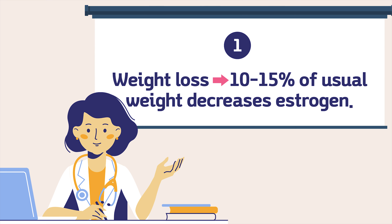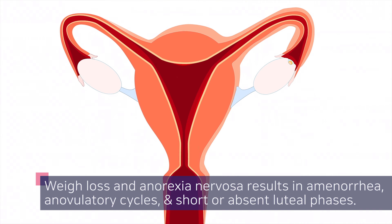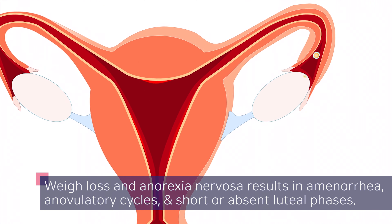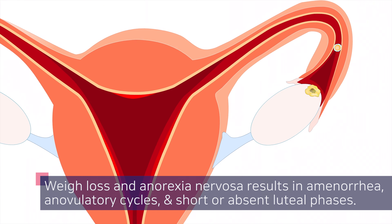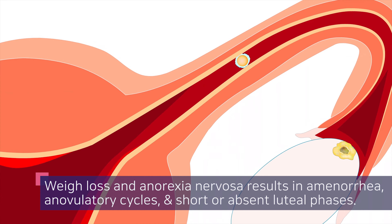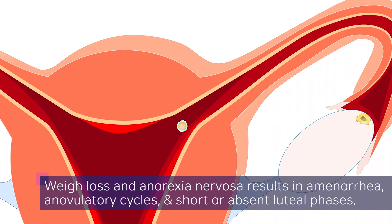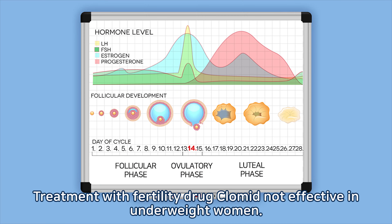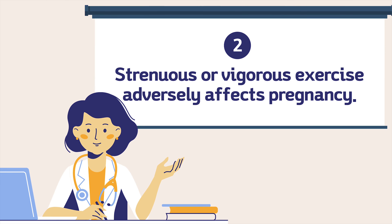One: weight loss more than 10 to 15 percent of usual weight decreases estrogen. Weight loss and anorexia nervosa result in amenorrhea, anovulatory cycles, and short or absent luteal phases. Treatment with the fertility drug Clomid is not effective in underweight women.